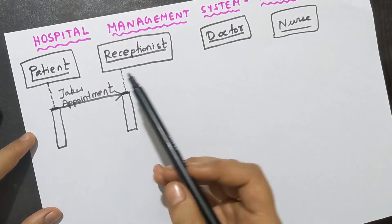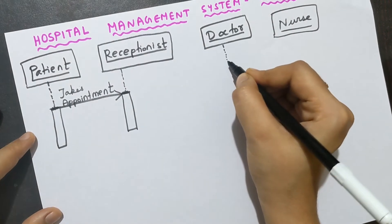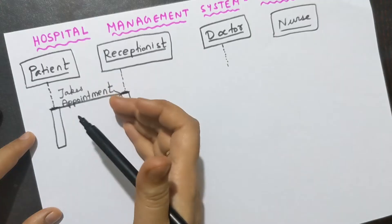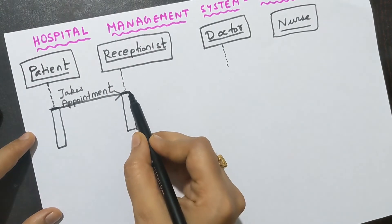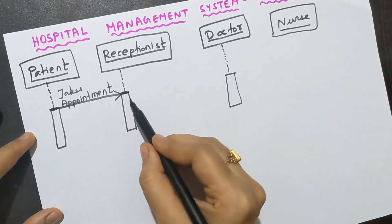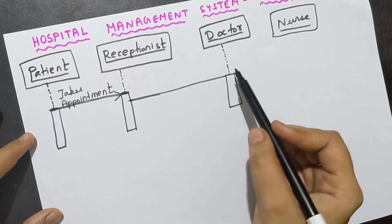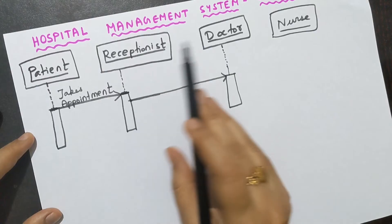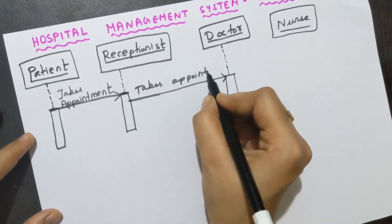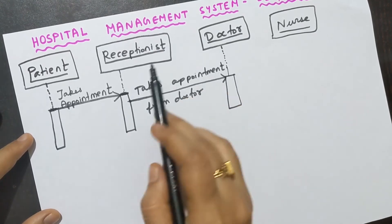Next, the receptionist will be taking the appointment from the doctor. So you need to draw the dotted lines to the doctor and start the doctor's activation box a little lower — because after some time only will the receptionist go to the doctor and ask about the appointment. Draw a solid line with an arrow from receptionist to doctor, and write 'takes appointment from the doctor.'